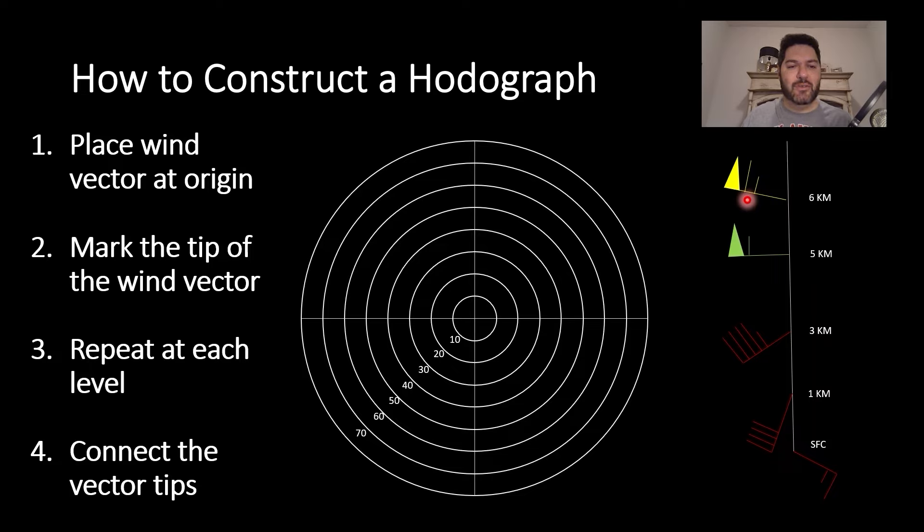So how do you plot this on the hodograph? First, you place your wind vector at the origin, then you mark the tip of the wind vector, and then you repeat at each level. Once you've done that, you connect all the vector tips. The surface wind - you start at the center and you plot it in the direction of the wind and as far as the wind magnitude will take you. In this case, 15 knots, so you go basically one of these circles plus a half out.